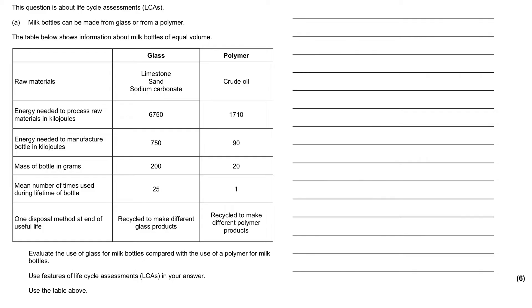This question is about life cycle assessments. We're told that milk bottles can be made from either glass or from polymers, and we are shown information in this table about the impacts of these two different possible sources of our milk bottles on the environment.